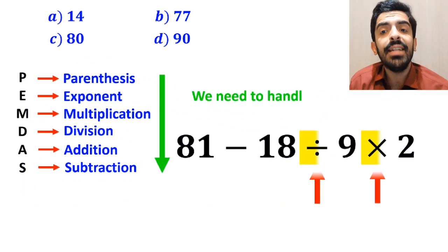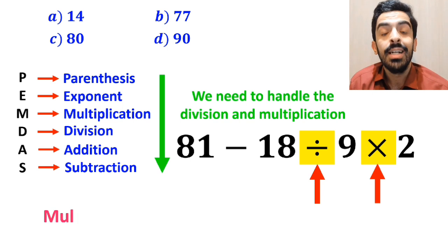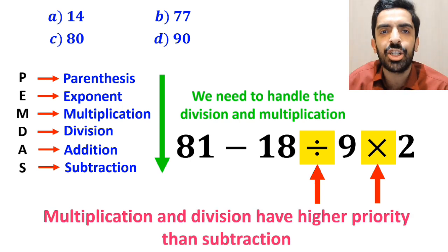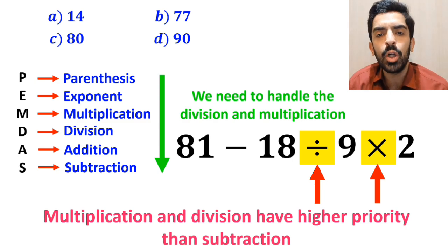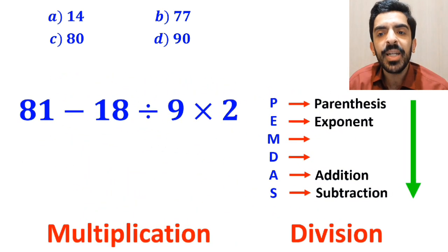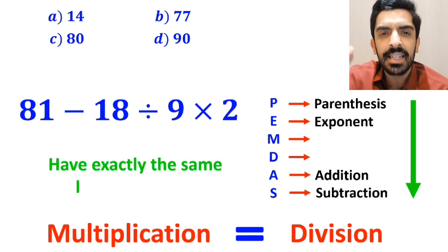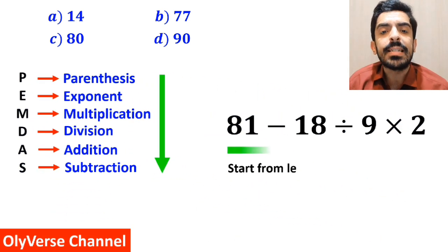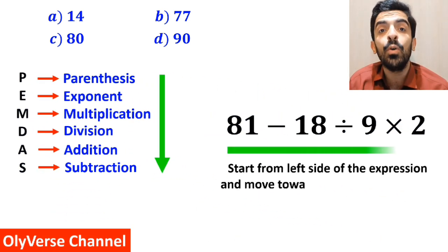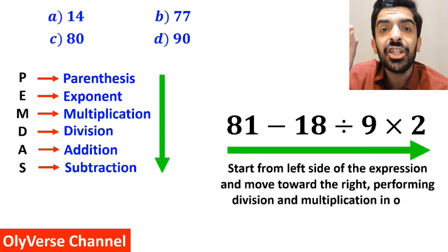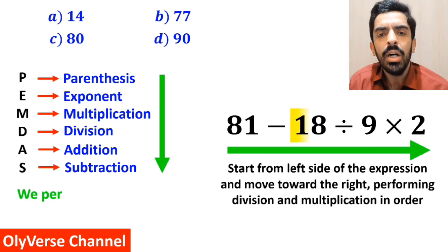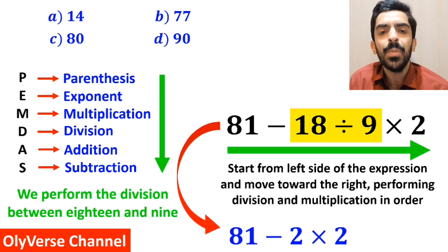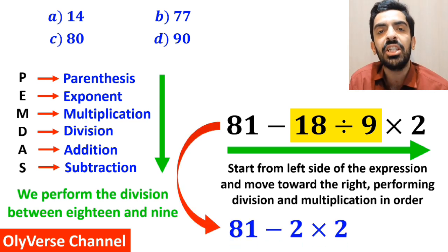The next step is to handle the division and multiplication, since they have higher priority than subtraction. It's very important to note that in PEMDAS, multiplication and division have exactly the same level of priority. In this situation, we start from the left side of the expression and move right, performing division and multiplication in order. So first we perform the division between 18 and 9, simplifying the expression to 81 minus 2 times 2.